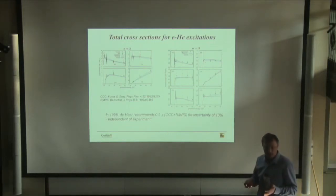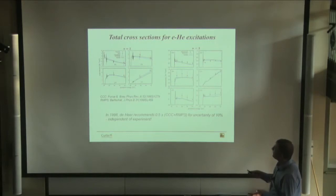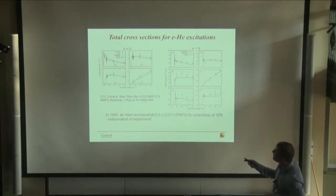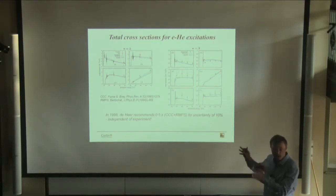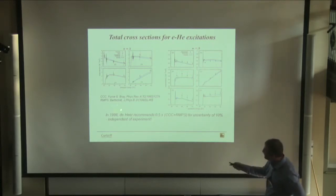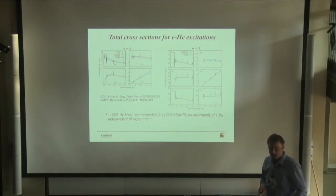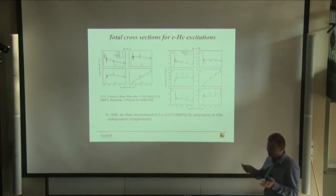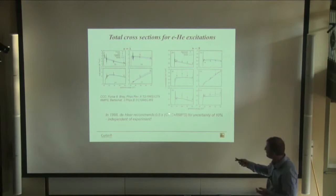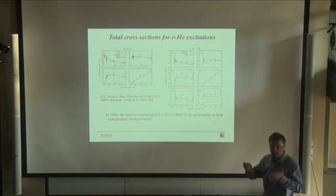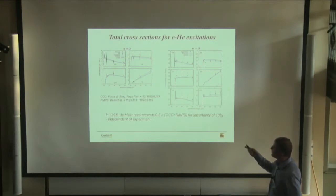Now, what about other atoms? For helium, here are results of 75-state CCC calculations and RMPS calculations compared with various experimental results for the n=2 and n=3 levels. Even in 1998 when these results were obtained, there was a recommendation that the theoretical results were more accurate than experiment, and the suggestion was to take the CCC and RMPS sum and average them, producing accuracy better than the available experimental data.